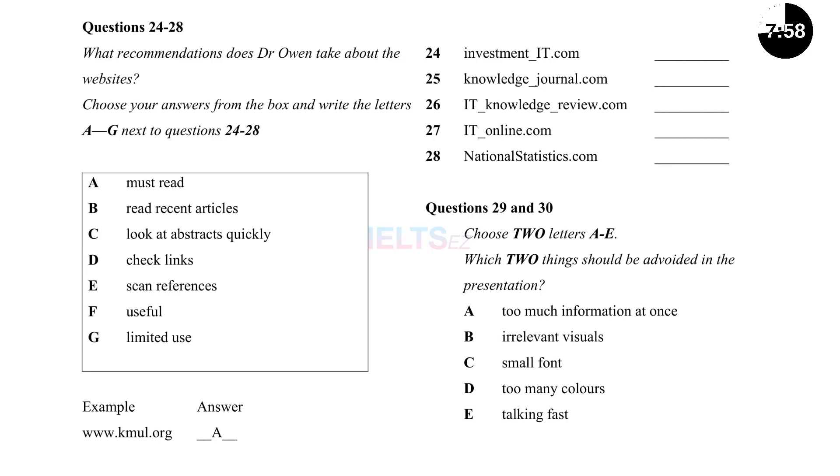Then there's itknowledgereview.com. It's got loads of articles, but it's probably best just to read those that have come out in the last term or so. Do you have to subscribe? No, it's free from the university library. And another free journal online is itonline.com. I wouldn't say it's essential to read it, but it is beneficial. And so, I think it is worth a look. If you think it's useful, there is no harm in looking at it. But nationalstatistics.com is worth looking at and trying out the links that it gives.